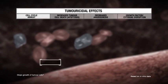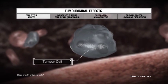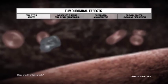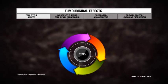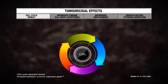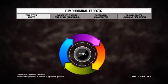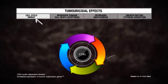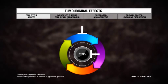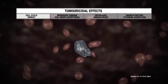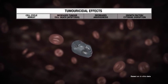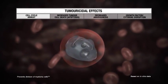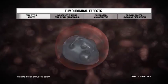Revlimid helps directly reduce tumour cell burden by stopping the growth of myeloma cells. It inhibits the cell cycle of myeloma cells by increasing the expression of certain tumour suppressor genes, such as the cyclin-dependent kinase inhibitors and the early growth response family of genes. The upregulation of these genes, in the presence of Revlimid, arrests the cell cycle and prevents the division of myeloma cells.